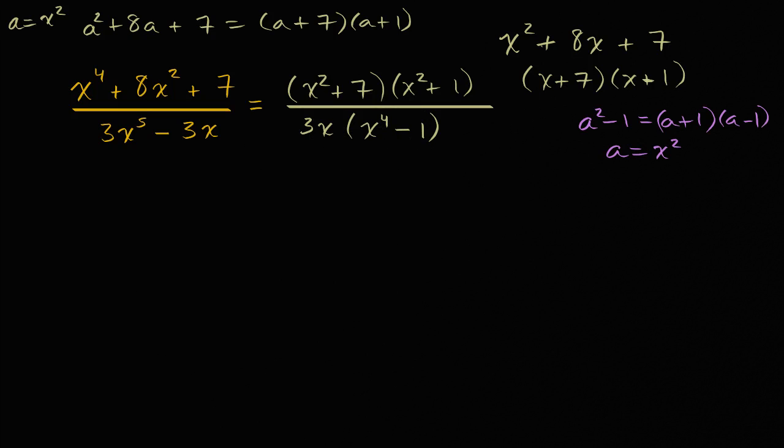So let's rewrite all of this. So this is all going to be equal to, same numerator, x squared plus seven, can't factor that out anymore, times x squared plus one, can't factor that out anymore, all of that over 3x.